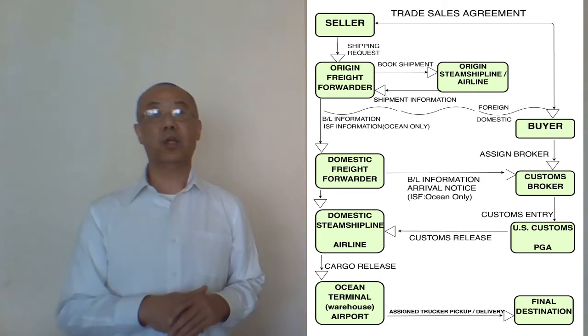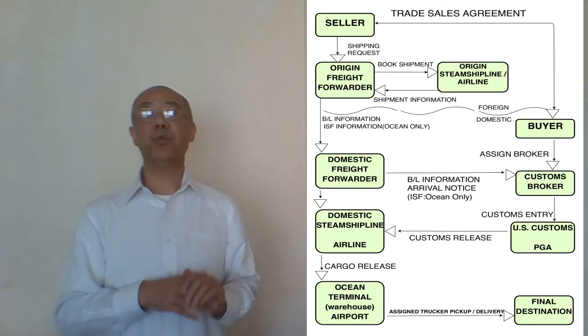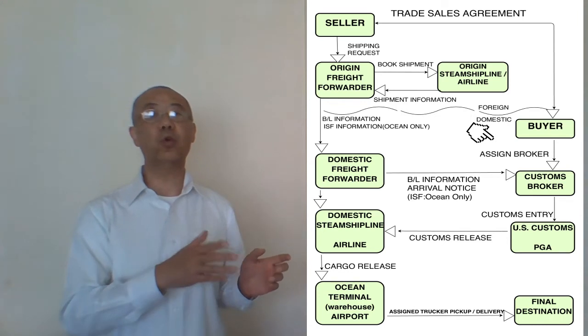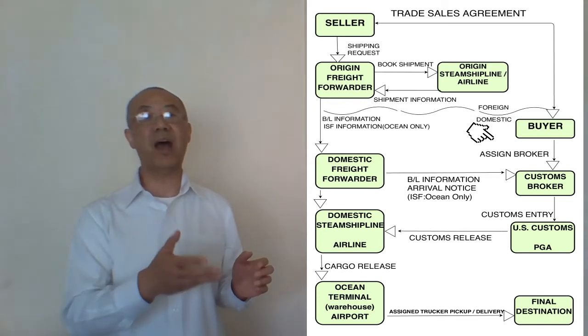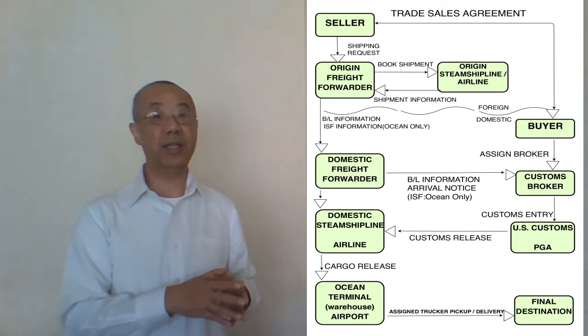Consequently, the cargo on the vessel is departing from the origin country. At the same time, the US domestic buyer needs to find a customs broker who will present and clear customs on your behalf when the cargo arrives if it is not designated yet.